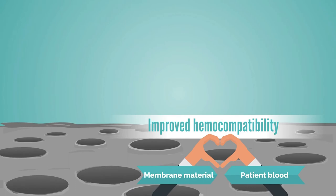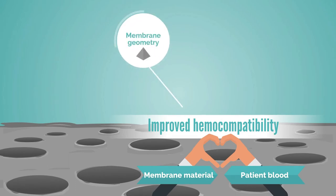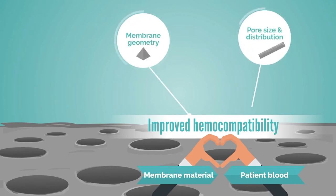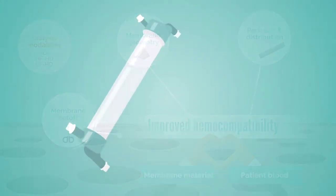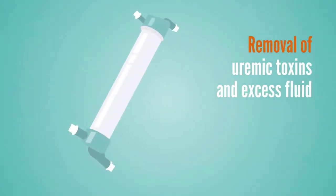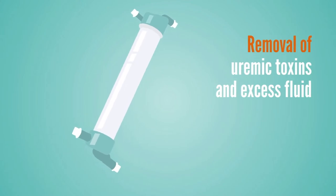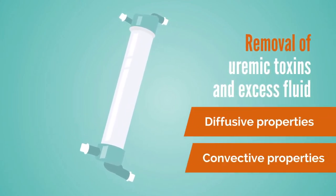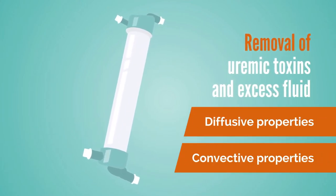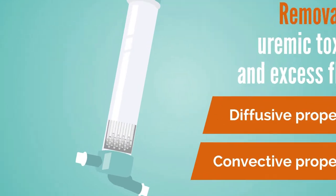Some of the aspects which have further advanced membrane hemocompatibility include membrane geometry, pore size and distribution, cut-off, and dialysis modalities. The removal of uremic toxins and excess fluid from blood depends on both the diffusive and convective properties of a dialysis filter.